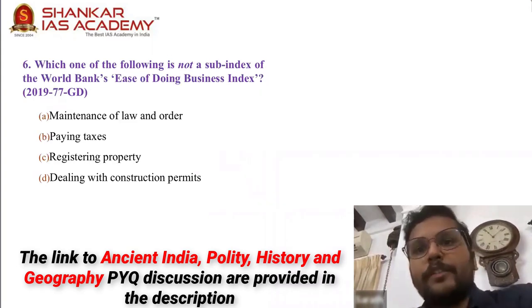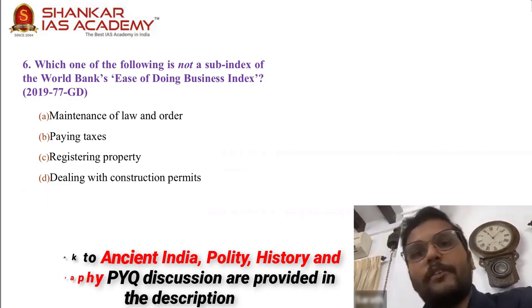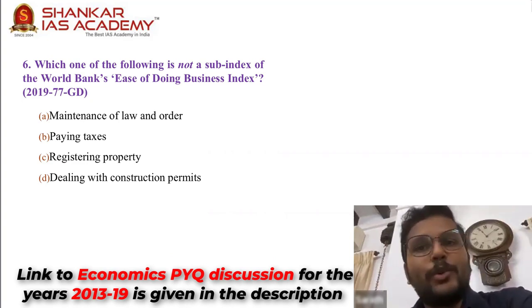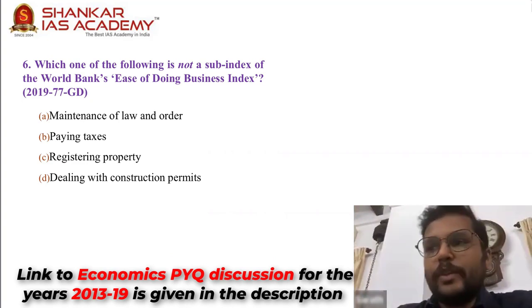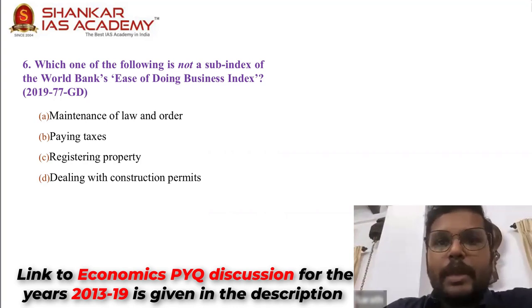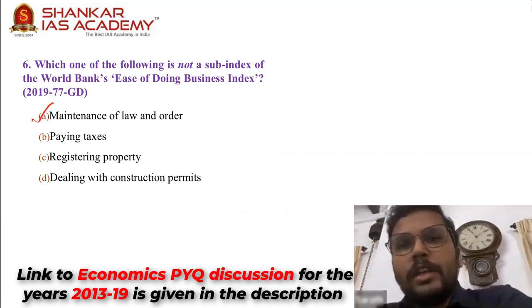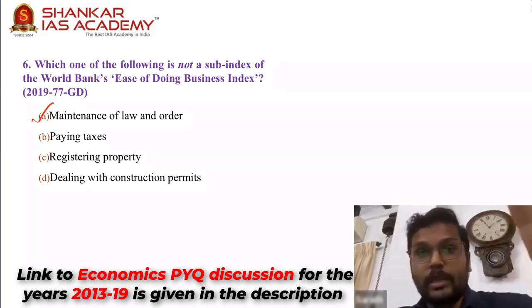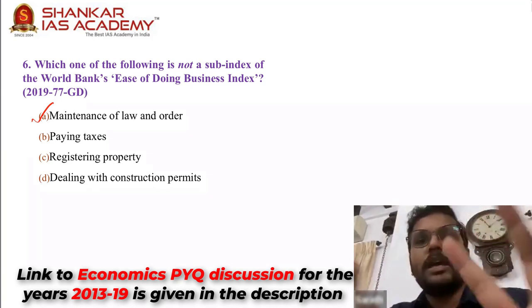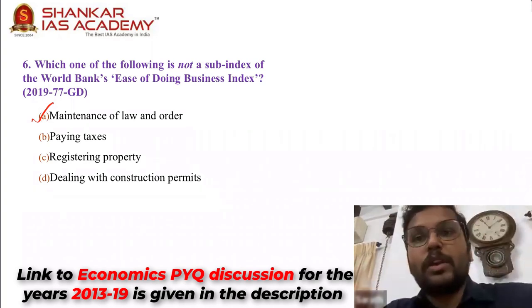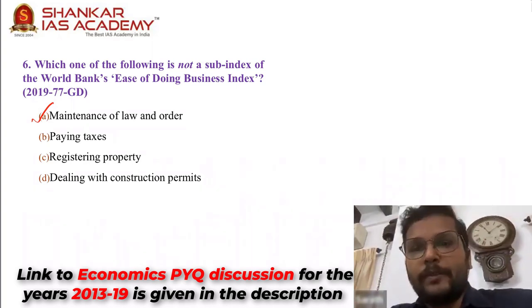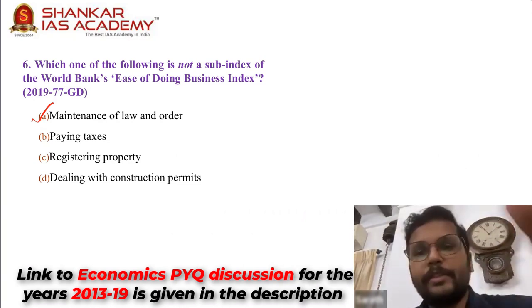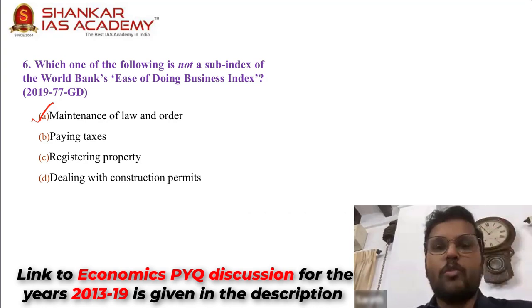Question 6: Which of the following is not a sub-index of World Bank's ease of doing business index? Similar to question 4 — without knowing it, you cannot answer. The answer is A — maintenance of law and order. The other options are among the sub-indices, of which I believe there are about 10. Maintenance of law and order is the one which is not a sub-index. If you don't know, move on.